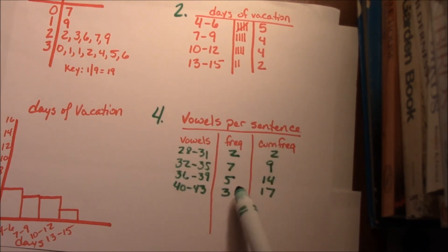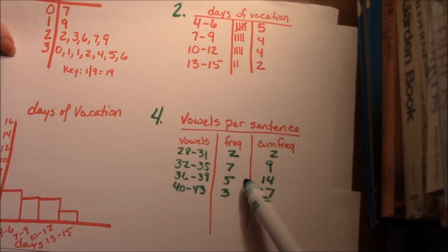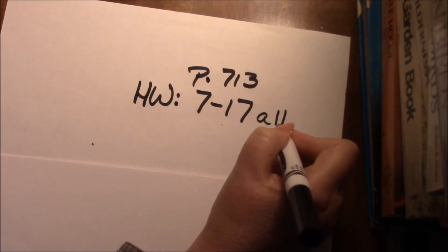So checkpoint number four asks for vowels per sentence. We have vowels and frequency and cumulative frequency, and I've broken them up into intervals of four. I have their basic frequency and then their total cumulative frequency. Okay, please make sure you ask if you have any questions.